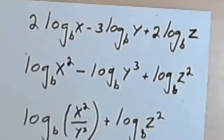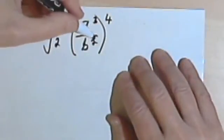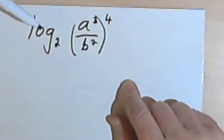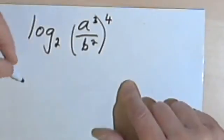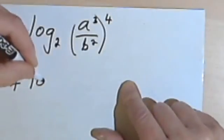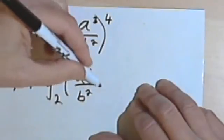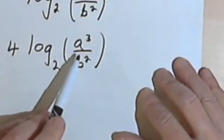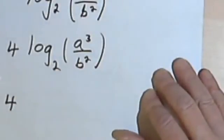Let's do a different problem where we go the other direction. Here I've got the log base 2 of a to the third over b squared, and that fraction is raised to the fourth power. The first thing I want to do in taking this apart — making it into a number of logs — is take that fourth power and make it a coefficient. So that means I'll have 4 times the log base 2 of the fraction a to the third over b squared. And now I'm going to use the quotient rule to take this fraction apart, with the 4 multiplying everything.